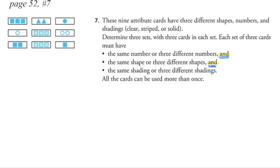In this particular question, we are given nine different cards. Each of those cards contains different shapes — we have either circles, triangles, or squares — different numbers of shapes, so we have either one, two, or three objects, and different shadings. We have either solid, striped, or clear shadings.